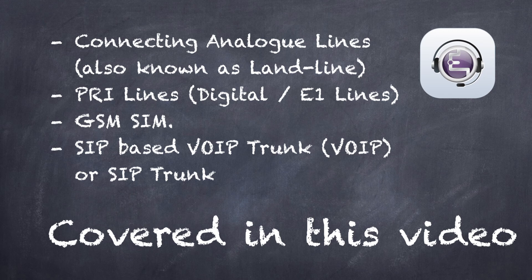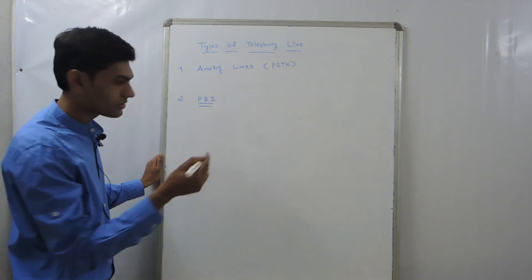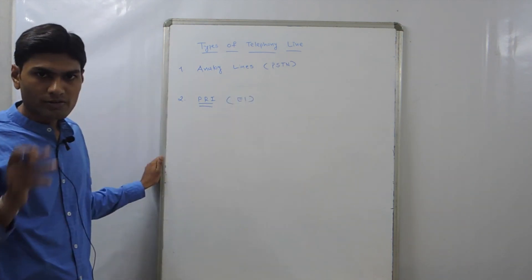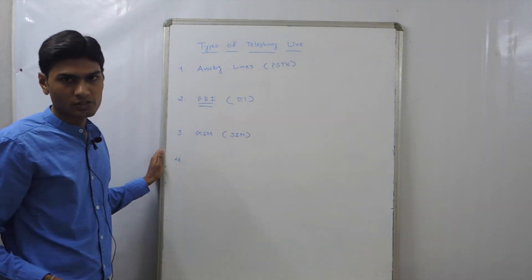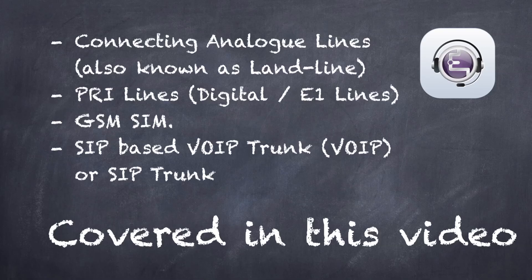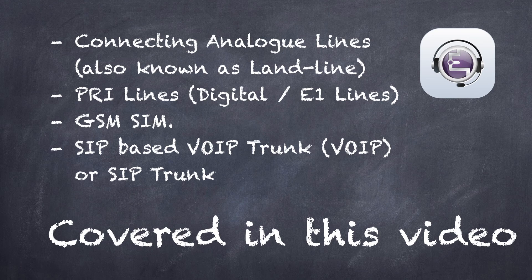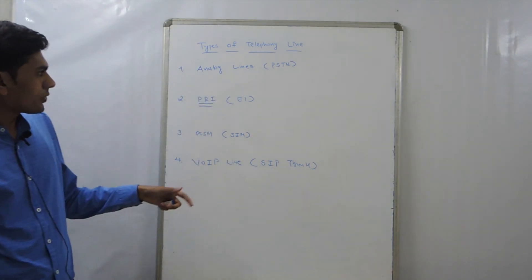Second type of line is PRA line, also we call it digital line or ISDN line. Third type of line is normal GSM SIM which we use in our mobile. Fourth one is the SIP-based VoIP trunk or we call it VoIP line, also we call it SIP trunk. Now we try to analyze all the lines.